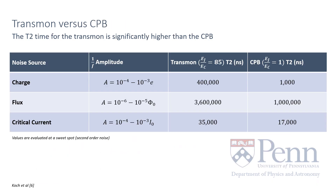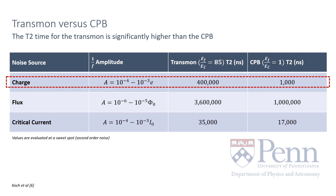In direct comparison to the Cooper pair box, we can see that the T2 time for the transmon is significantly outperforming the CPB qubit with respect to charge noise sources, demonstrating this robustness that we claimed earlier.